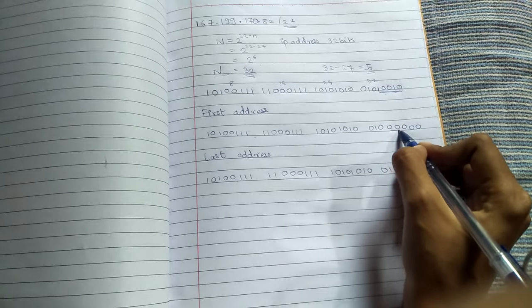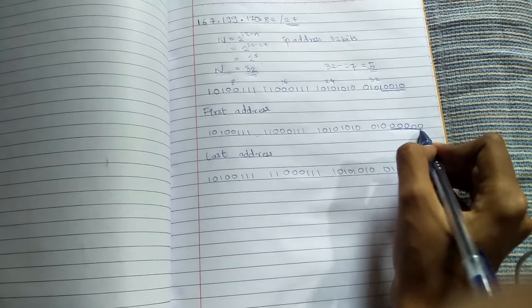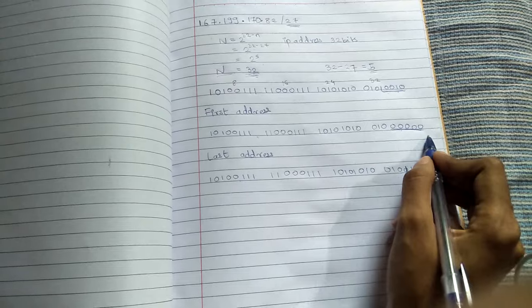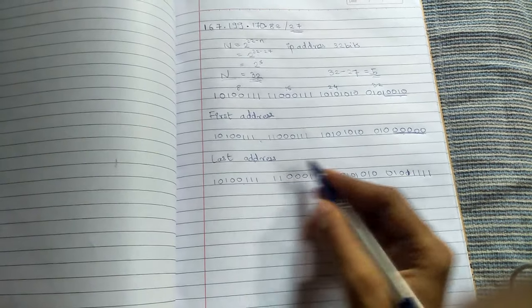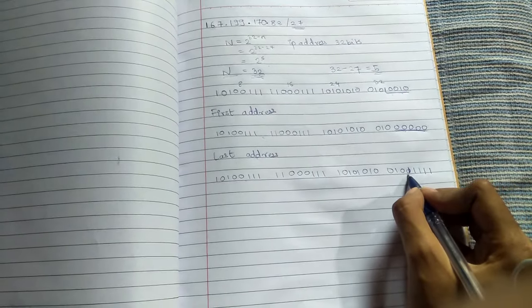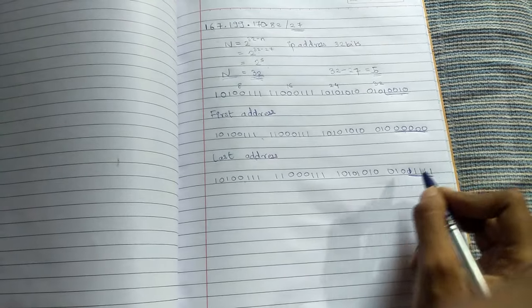This is the first address. And for the last address, you have to convert this remaining last five bits into one.